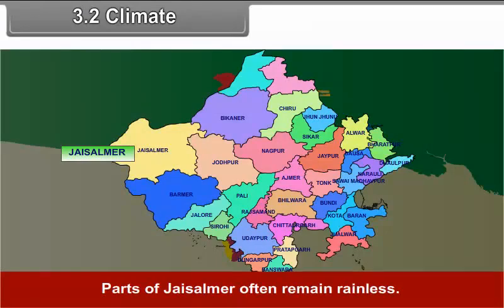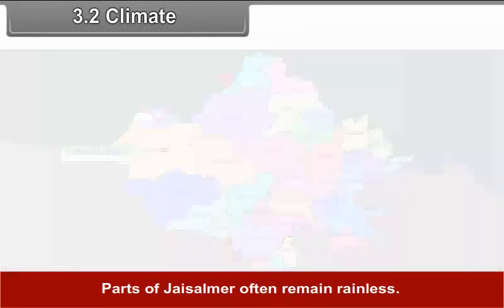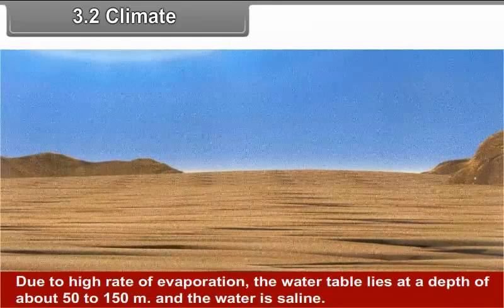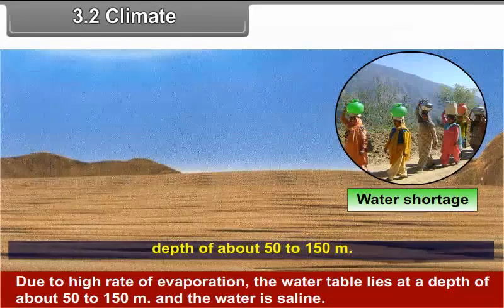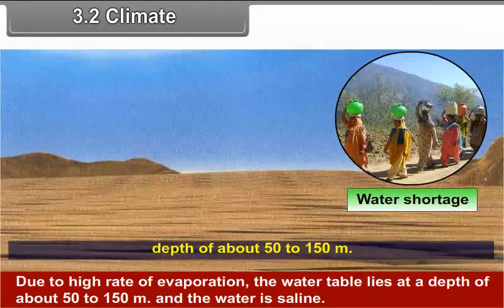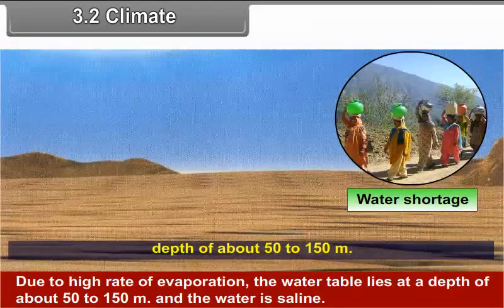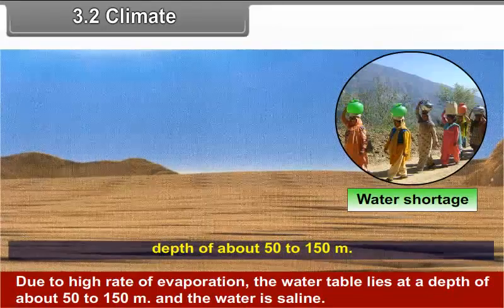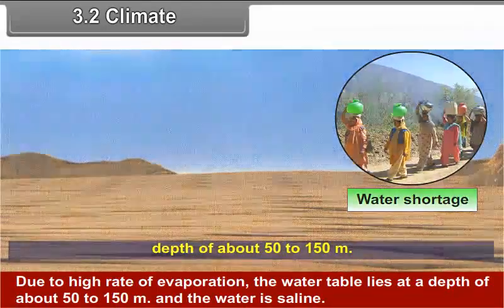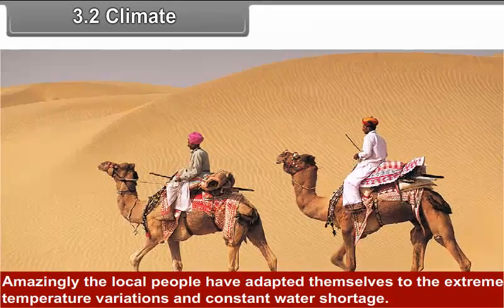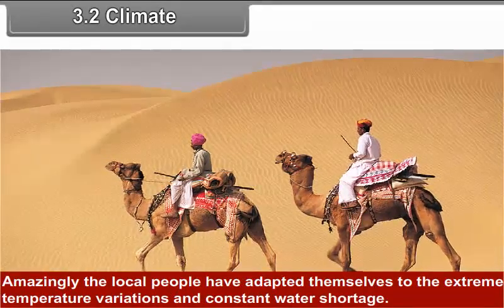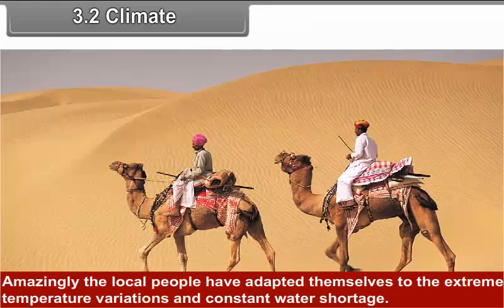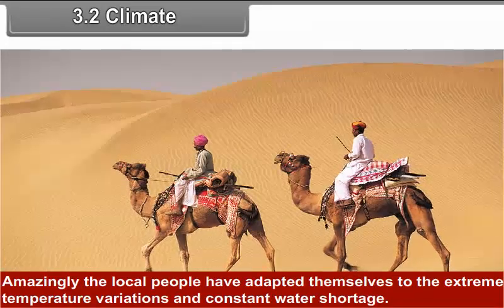Parts of Jaisalmer often remain rainless. Due to the high rate of evaporation, the water table lies at a depth of about 50 to 150 meters and the water is saline. Amazingly, the local people have adapted themselves to the extreme temperature variations and constant water shortage.